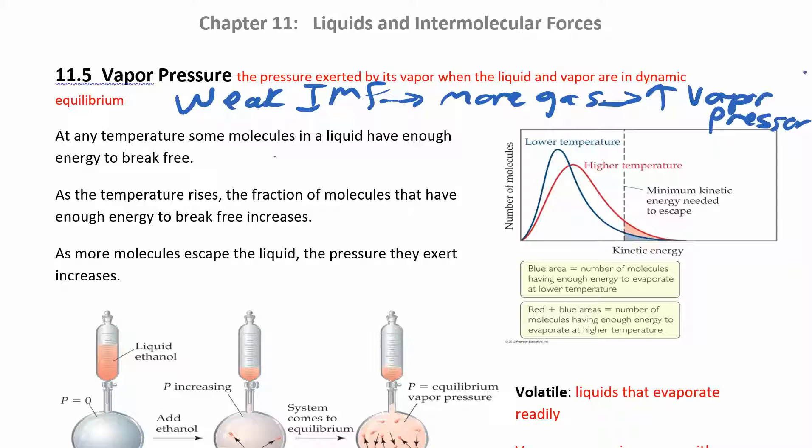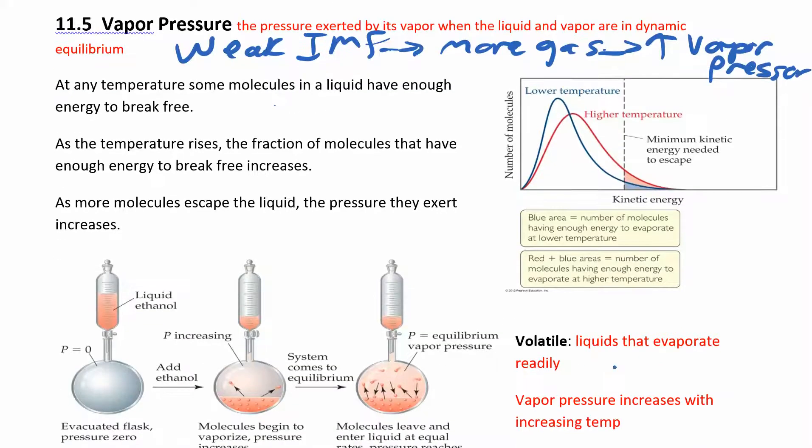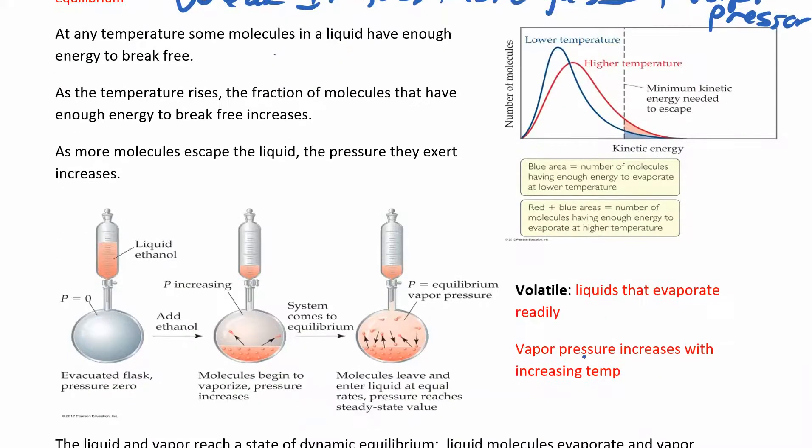Volatile, so the molecules that do that really easily, so liquids that evaporate readily, those are called volatile chemicals. And vapor pressure is going to increase with temperature. So if you increase the temperature, now molecules are going to have more energy, they're going to be able to overcome any of the forces holding them into the liquid phase and it's easier for them to evaporate, or to go from the liquid to the gas phase.